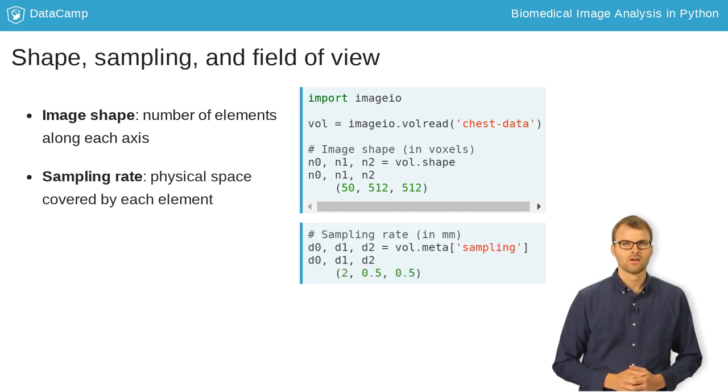The amount of space covered by each element is the sampling rate, and it can vary along each dimension. For DICOM images, the sampling rate is usually encoded in the metadata. For other types of image formats, such as JPEG and PNG, you may need to find it elsewhere.